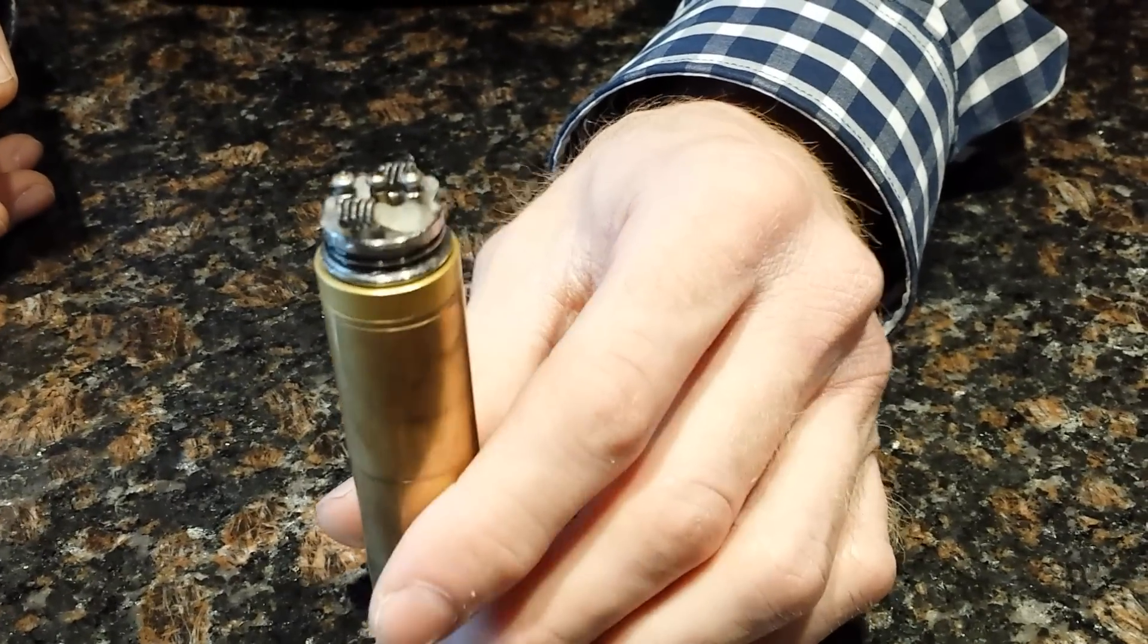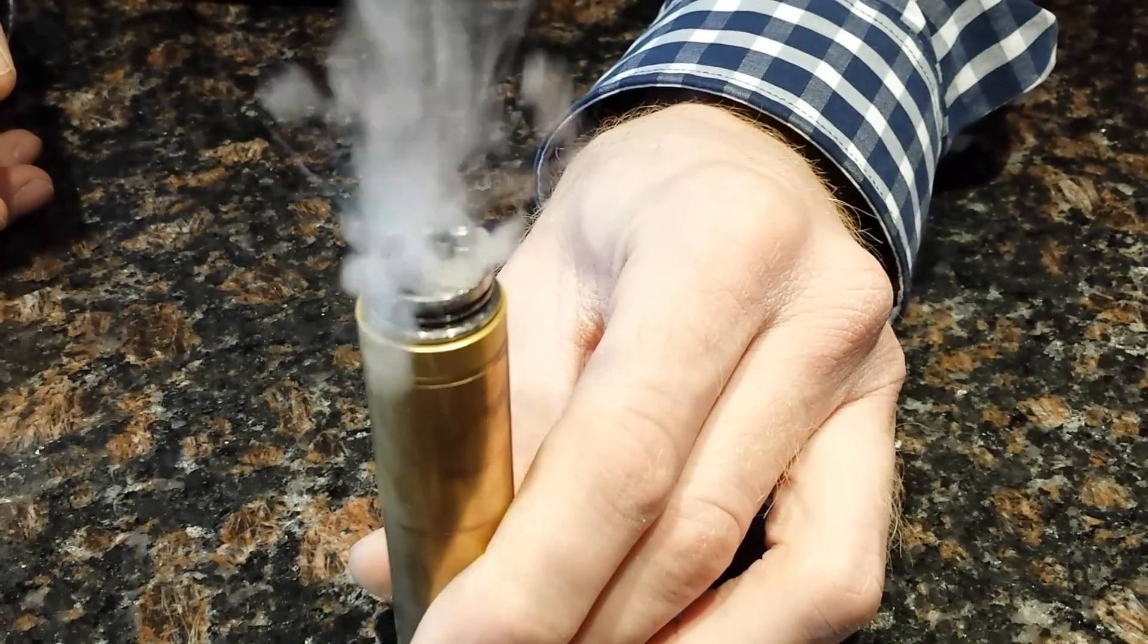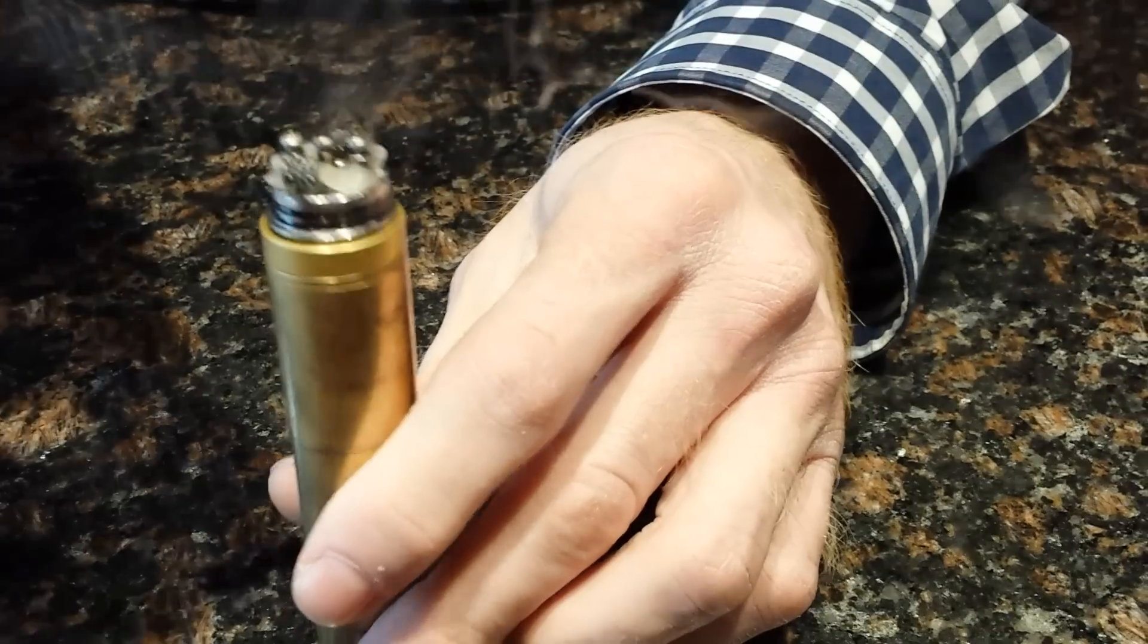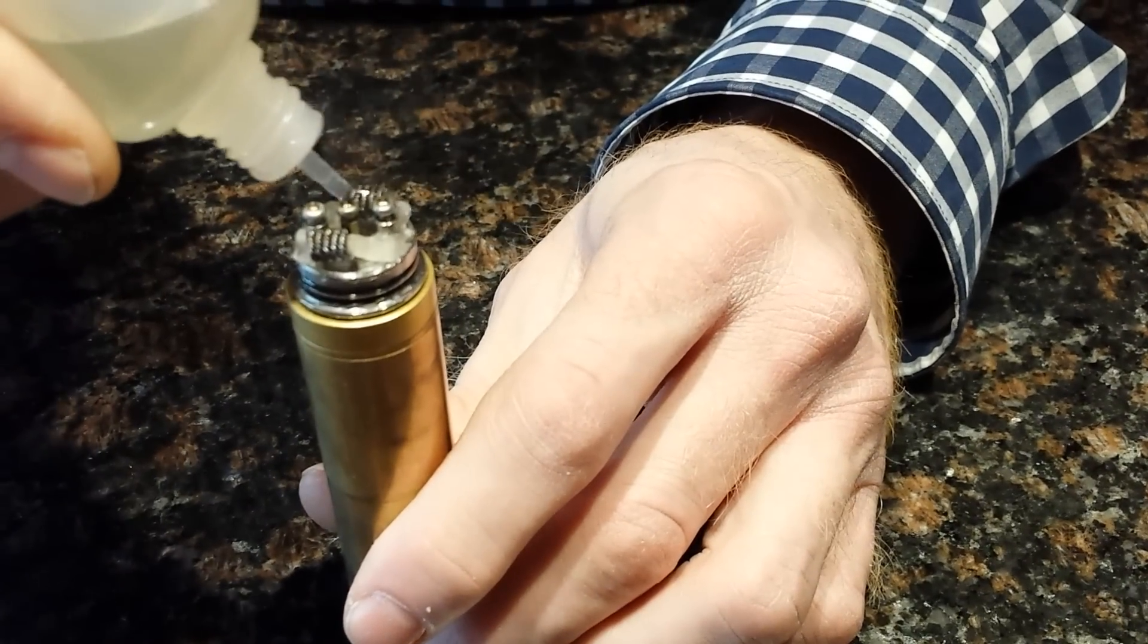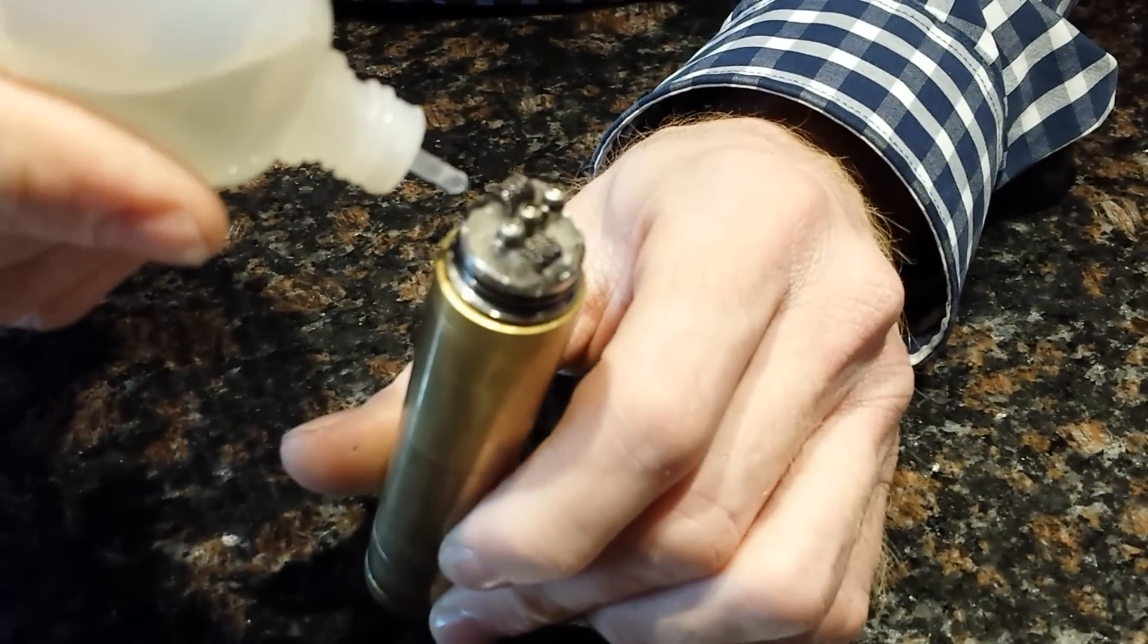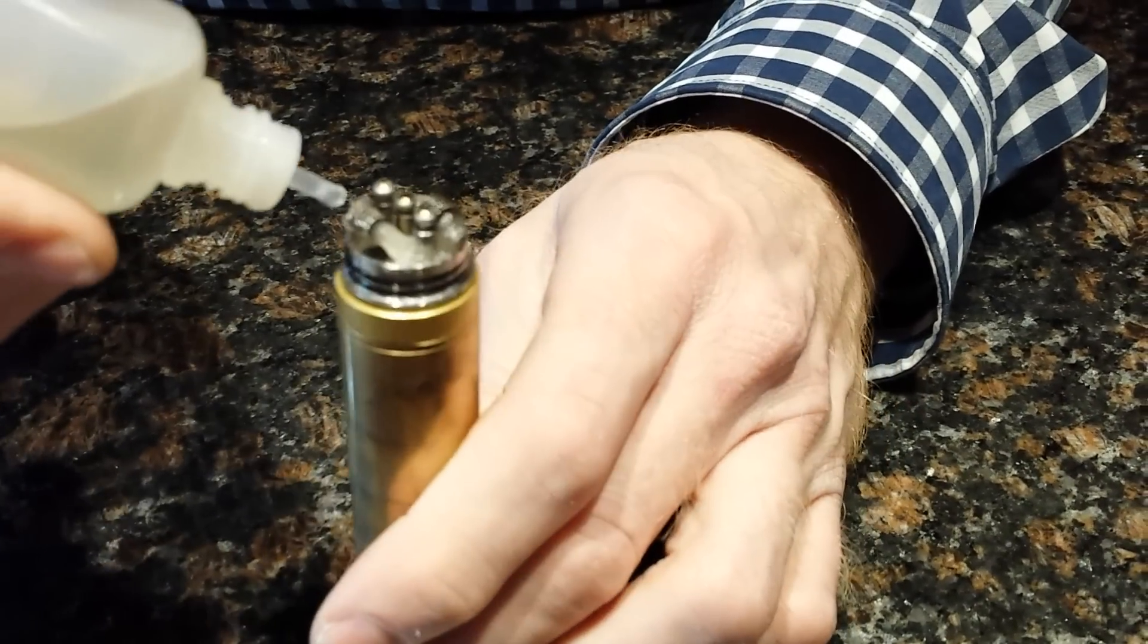All right, so dual coil single strand, and since this wire wicks so well it just needs a little bit of cotton, like a teeny tiny bit, just to pull it up in there.